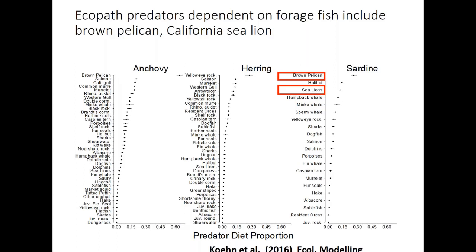Each model had a really useful role to play. For the Ecopath model, the first benefit was thinking about what are the key predators and prey in the ecosystem. We see predator diet proportion on the x-axis and each predator on the y-axis, showing consumption of anchovy, herring, and sardine. Brown pelican and sea lions consume fairly large amounts of sardine proportionally, and those same species also consume anchovy. The Ecopath model helped identify key predators and the importance of including anchovy in analyses alongside sardine.